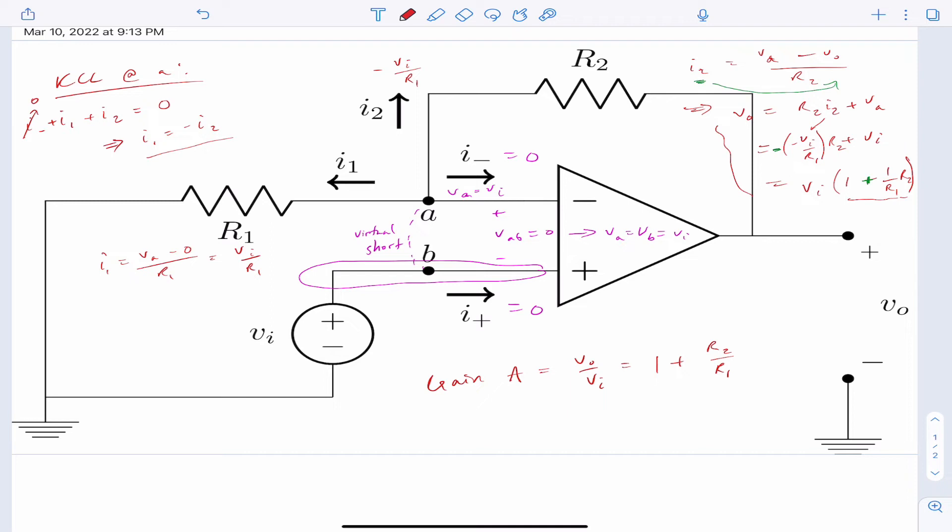And immediately, we can say this has to be greater than zero, because one is positive, and then both resistances are positive. And we know it's also greater than one, even stronger than just greater than zero, greater than one.